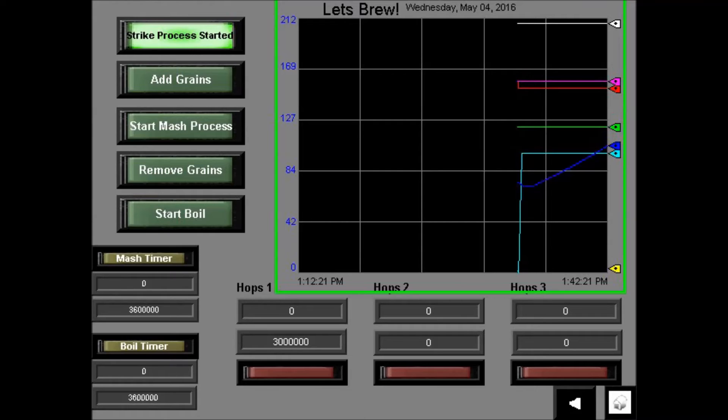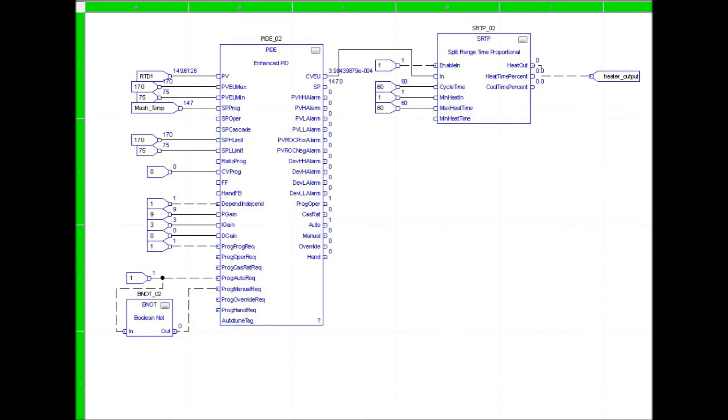Once the user starts a process, the strike subroutine is enabled, and the pump is turned on. The subroutine uses a PID loop that's output is sent to a split range time proportional instruction.